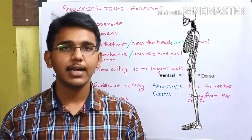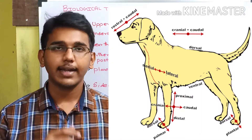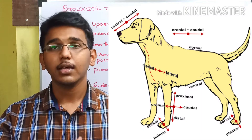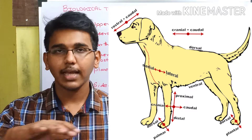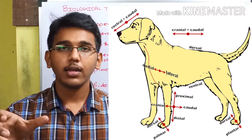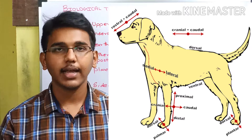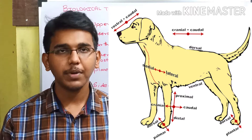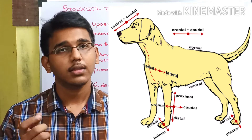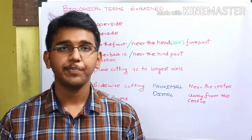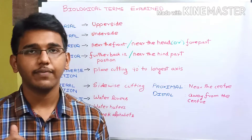For better understanding, consider a dog in standing position. The upper side of the dog is the dorsal side, and the underside under the abdomen is called the ventral side. So now we are clear with what is dorsal and ventral.